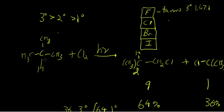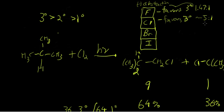In 2-methylpropane, which has only tertiary and primary hydrogens, chlorine favors tertiary hydrogen abstraction about 5 to 1. Bromine favors tertiary abstraction about 1,650 to 1. And iodine doesn't react at all. So we can see that selectivity increases going down the periodic table — bromination is the most selective.